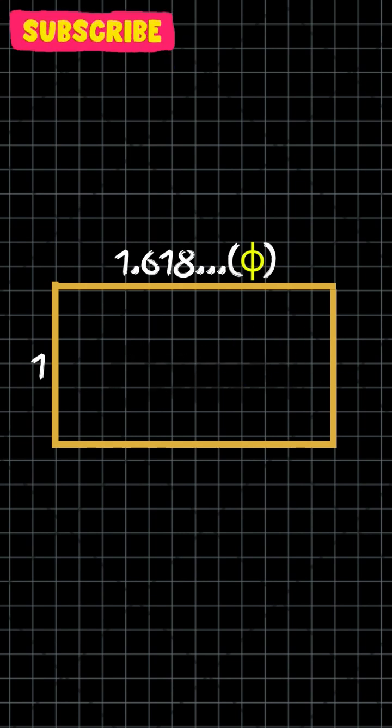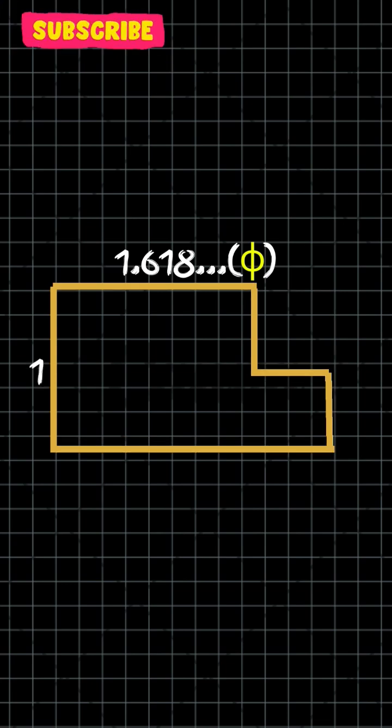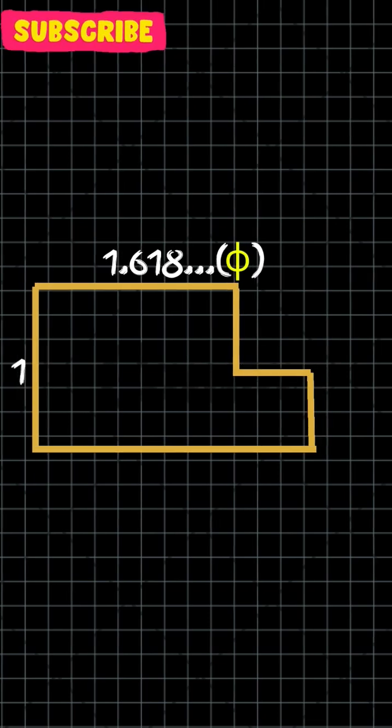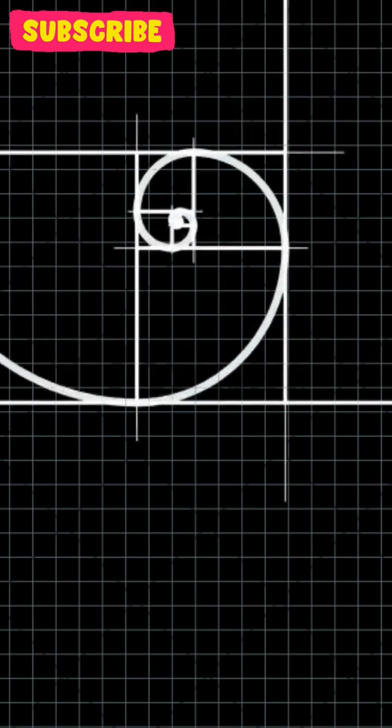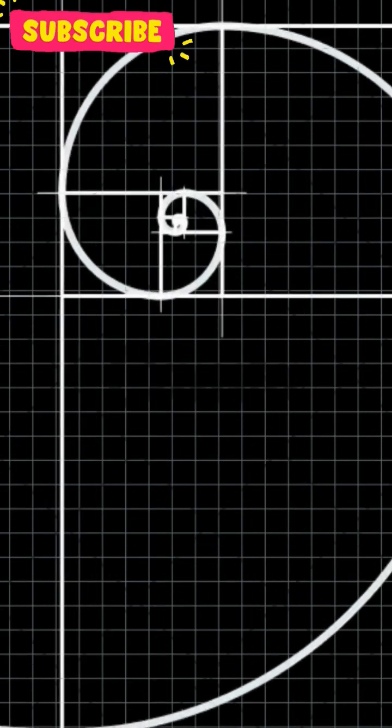It has the unique property that if you remove a square from one end, the remaining rectangle is also a golden rectangle. This process can be repeated infinitely, resulting in a spiral known as the golden ratio.